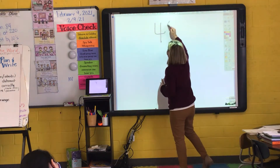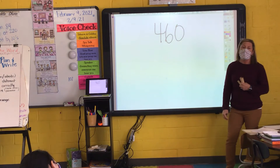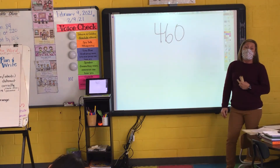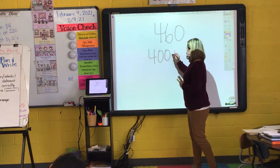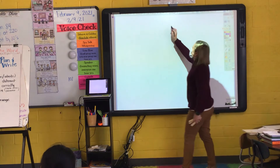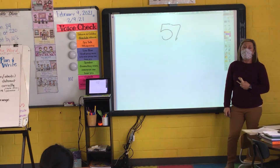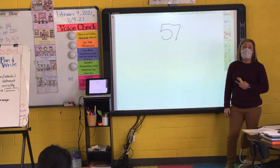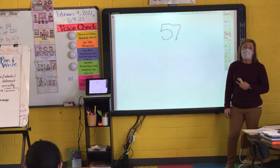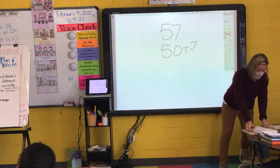How would I write 460 in expanded form? Leo: 400. Keep going. Plus 60. Plus 60, because I have zero ones. We're going to do one more like this: 57. How would I write 57 in expanded form, Kira? I don't have any hundreds. If I have 5 tens, how much do I have? 50 plus 7 is how I would write it in expanded form.